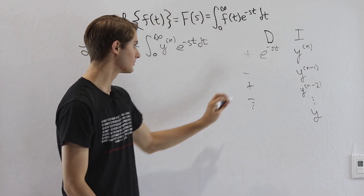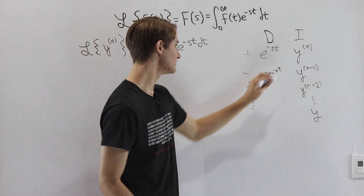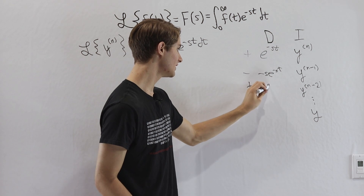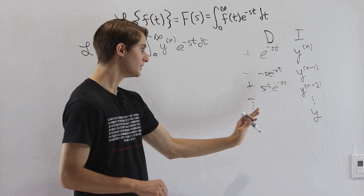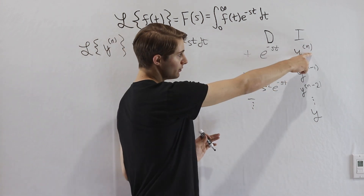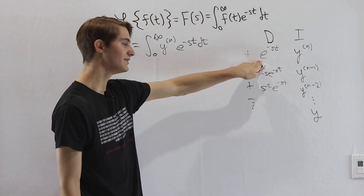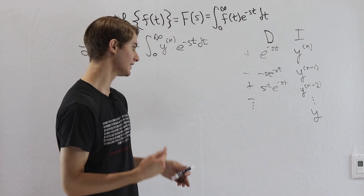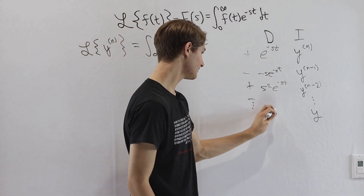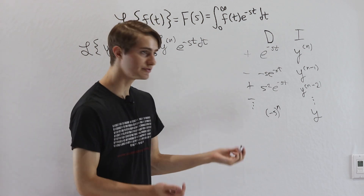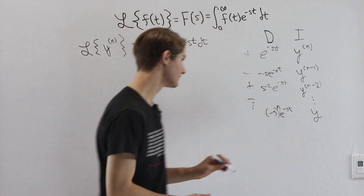On the differentiation side, we're going to have negative s times e to the negative st, then positive s squared times e to the negative st. If we keep going all the way down — after we integrate y n times, we differentiate e to the negative st n times — that gives us negative s to the power of n times e to the negative st.